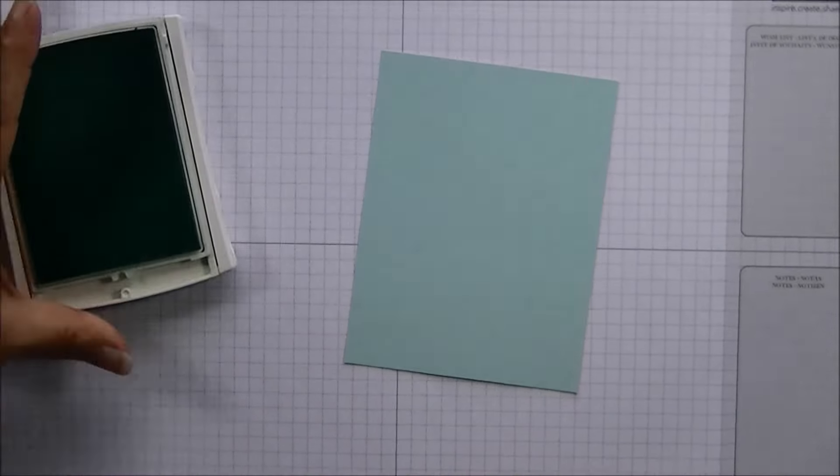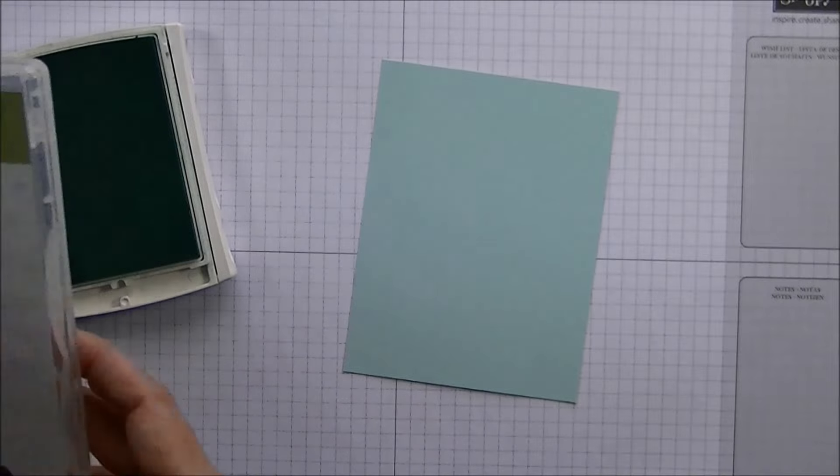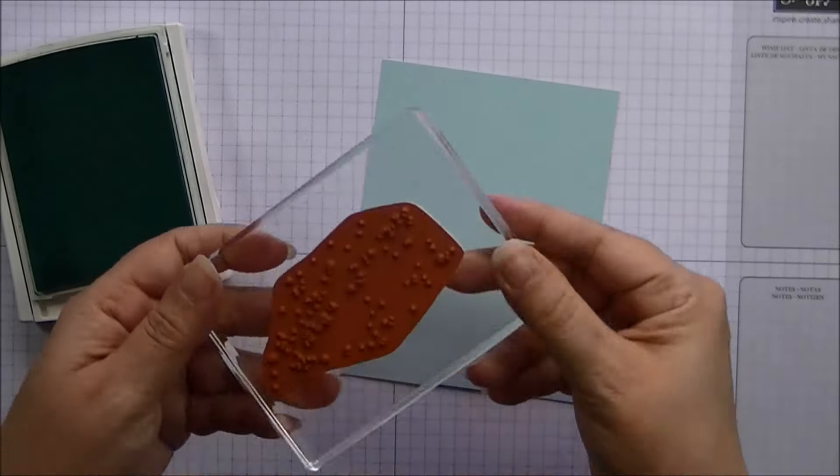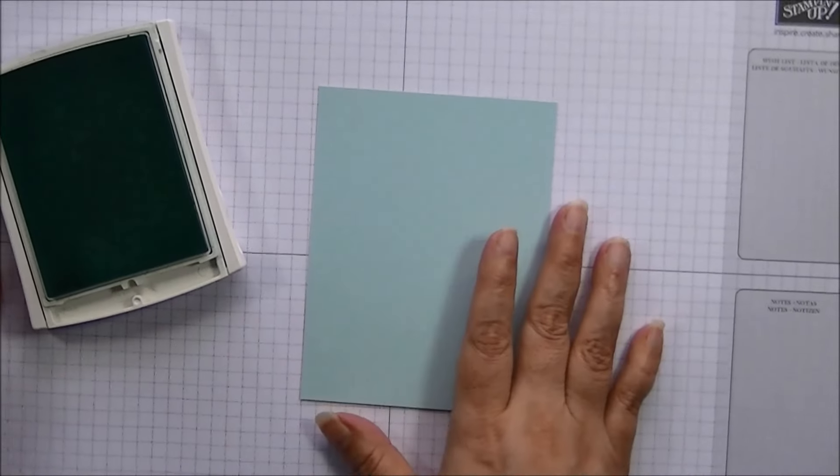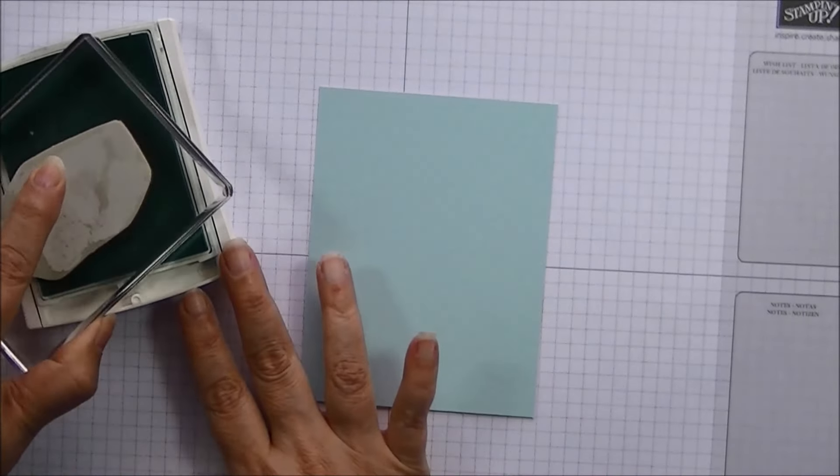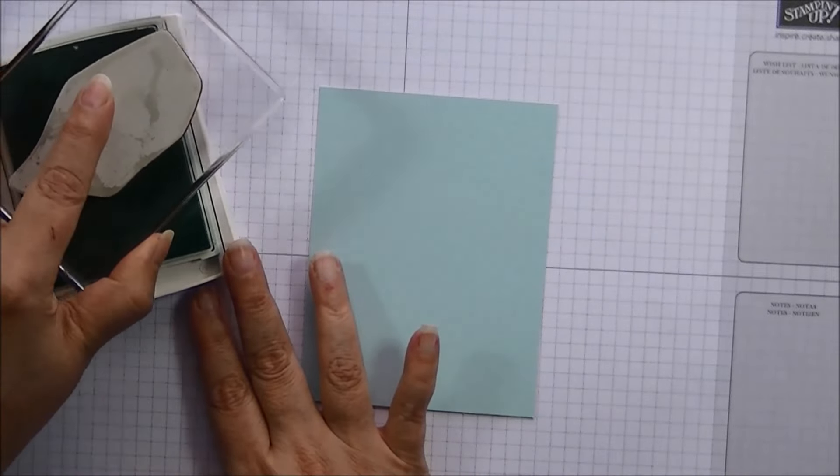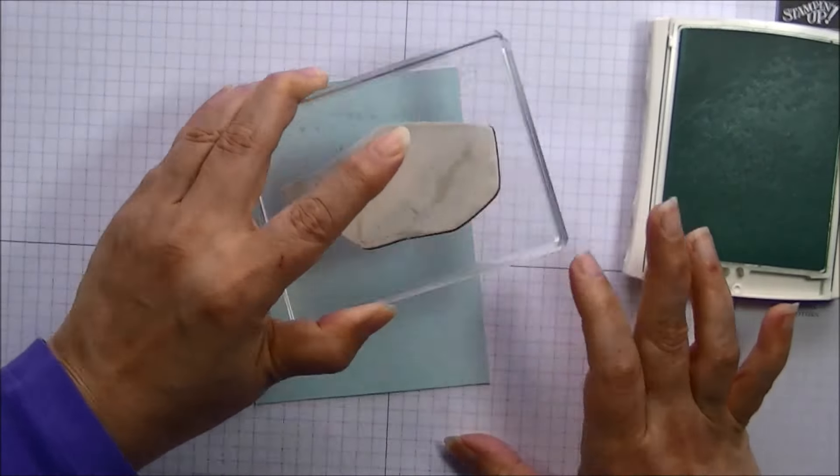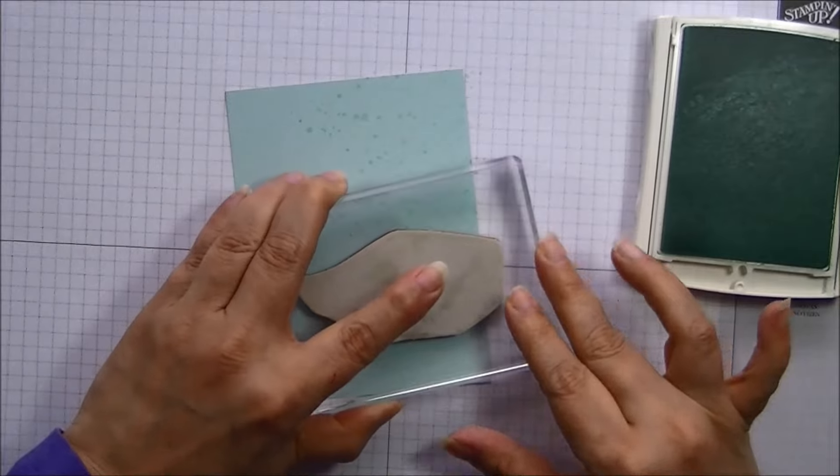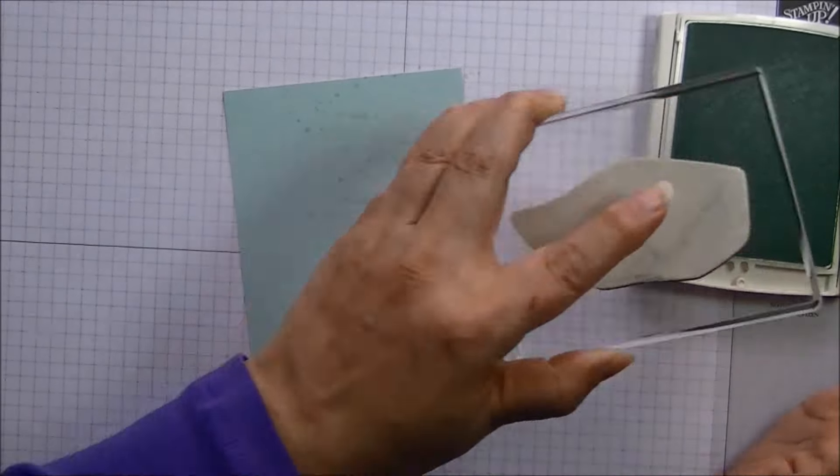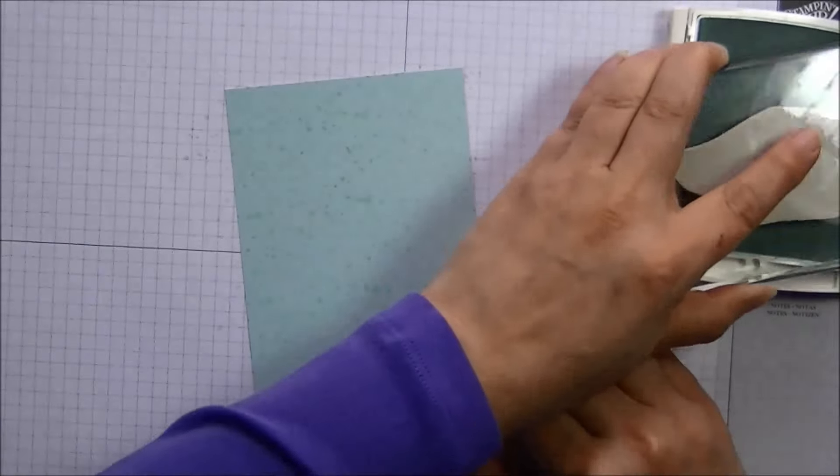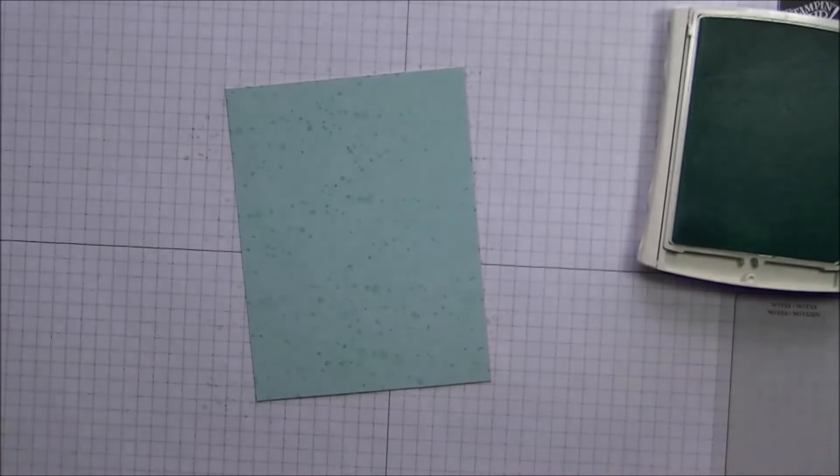I'm going to go ahead and grab the Pool Party card stock and the Pool Party ink pad. I'm going to go ahead and start with the stamp from the Gorgeous Grunge which is this paint splatter here. And I already have that mounted on my E-block so I'm going to go ahead and create just some background interest. So we're stamping the same color and we're just going to cover. So it creates a subtle background which is gorgeous. The tone on tone. Just like that.